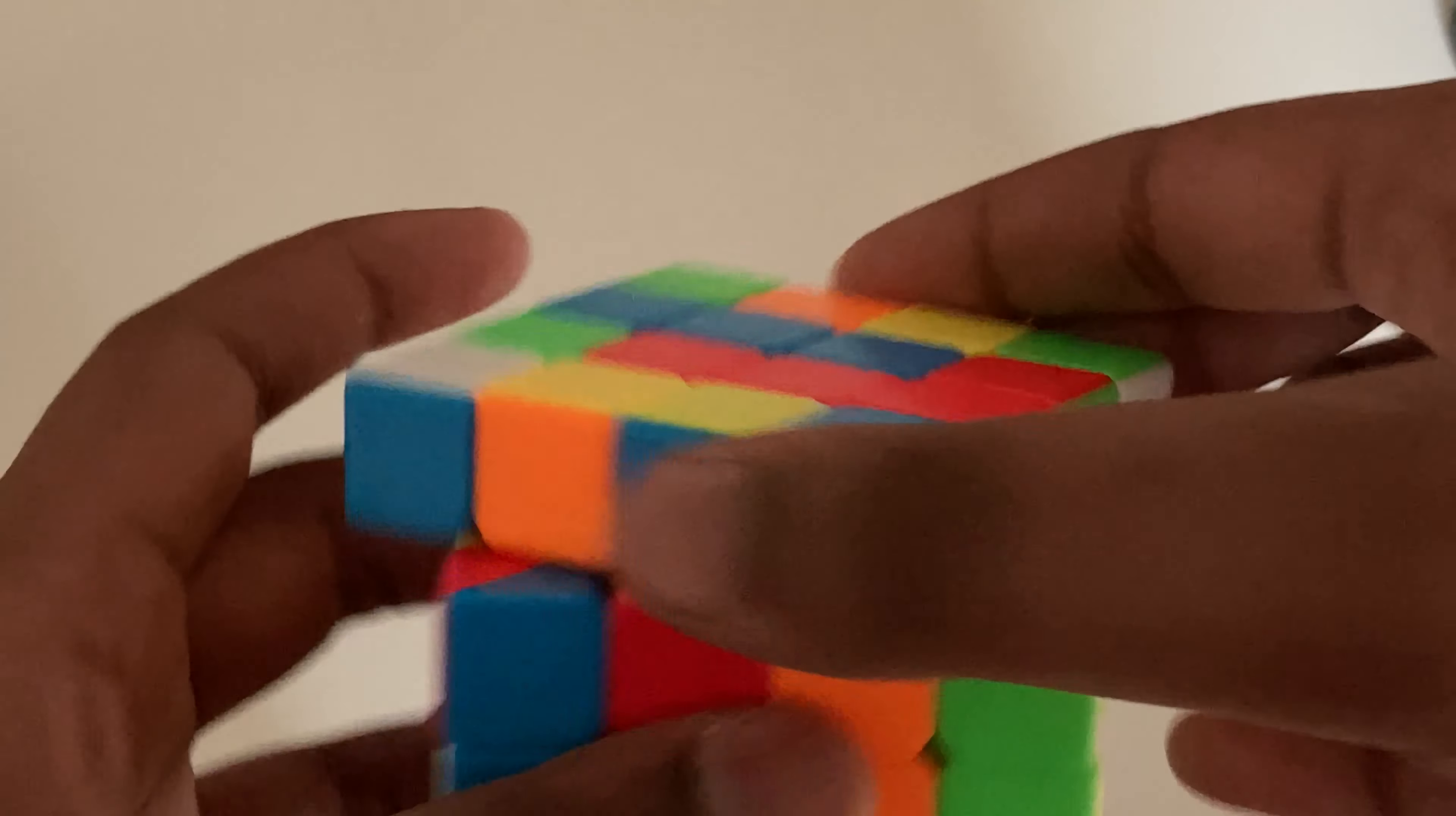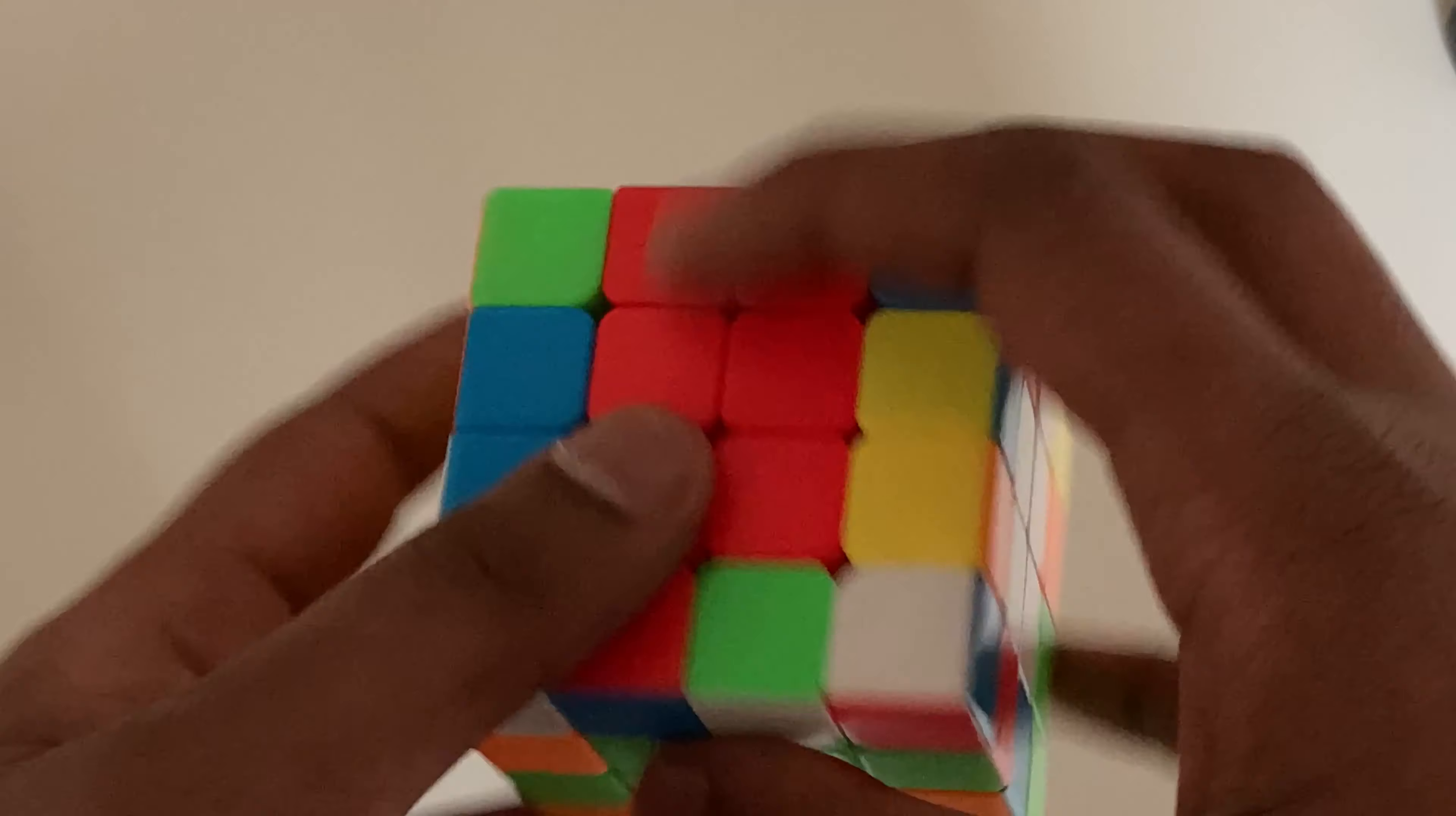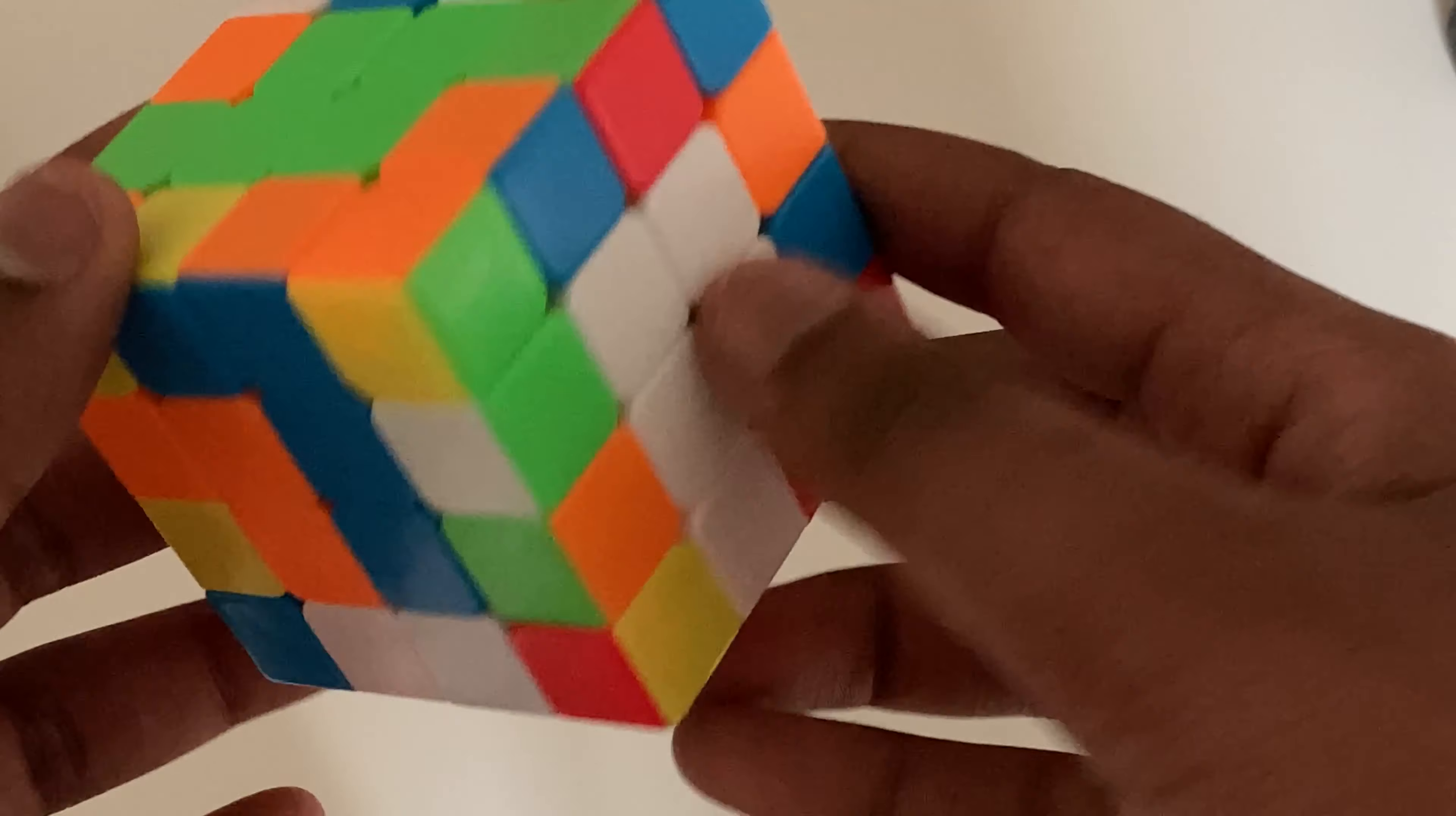So now it's here, so now again, you would think to go like this, but then it breaks, so what we're going to do is we're going to turn it like this, so now they're both at the same side, and we're going to go like that, so boom. So what I just did there was rw u2 rw prime, so there we go.